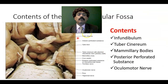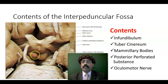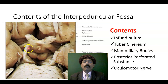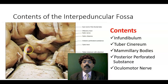So again, the contents of the interpeduncular fossa: the infundibulum, the tuber cinereum, the mammillary bodies, the posterior perforated substance, and the oculomotor nerve. Remember, the oculomotor nerve is a content of the interpeduncular fossa, but not the trochlear nerve or fourth nerve. The fourth nerve comes from the posterior aspect of the midbrain - that is not a content of the interpeduncular fossa. The interpeduncular fossa contains the oculomotor nerve.